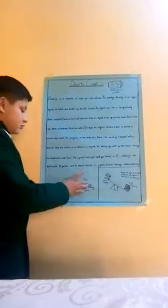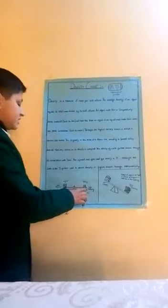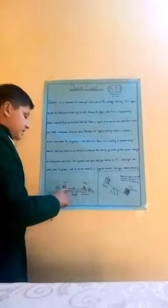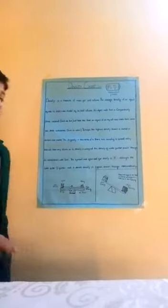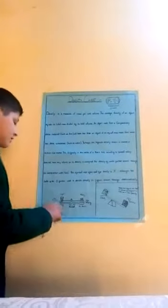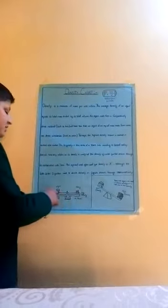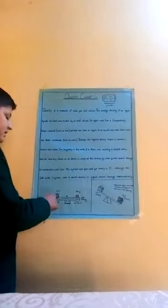Now coming towards our model. We take two things: in the first glass we take water, and in the second glass we take alcohol. Both glasses are of the same volume. We grade them both equal, and when we check them the water sinks down and alcohol rises up, due to the higher density of water compared to alcohol, which has less density.